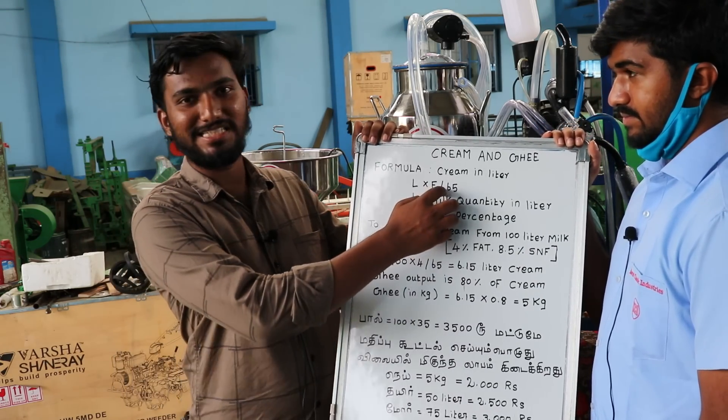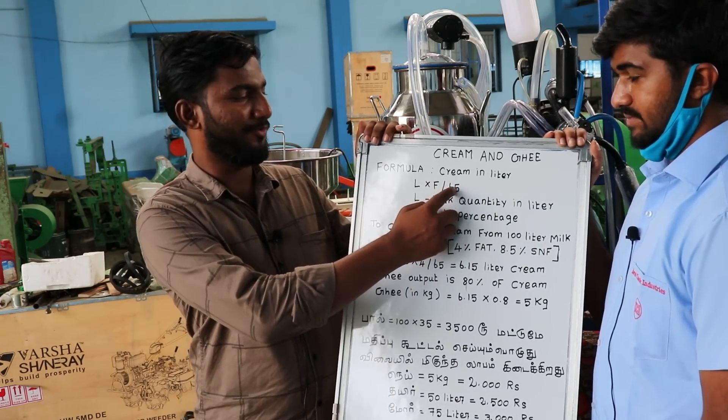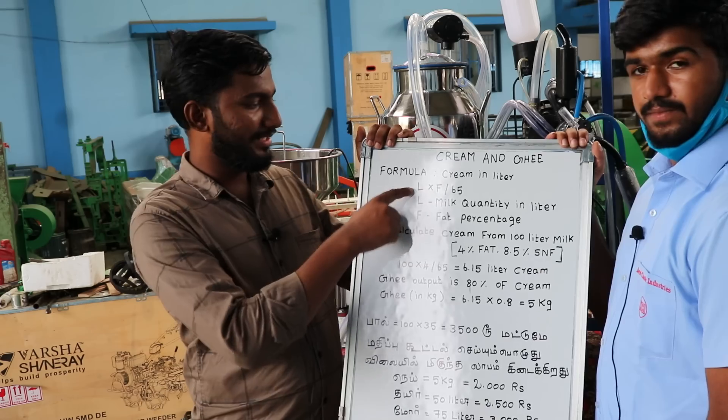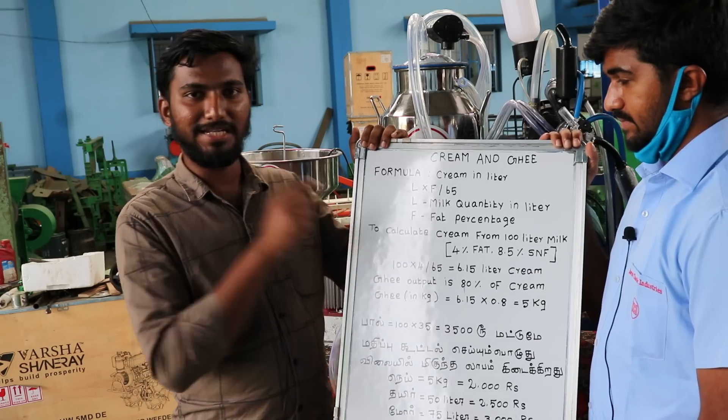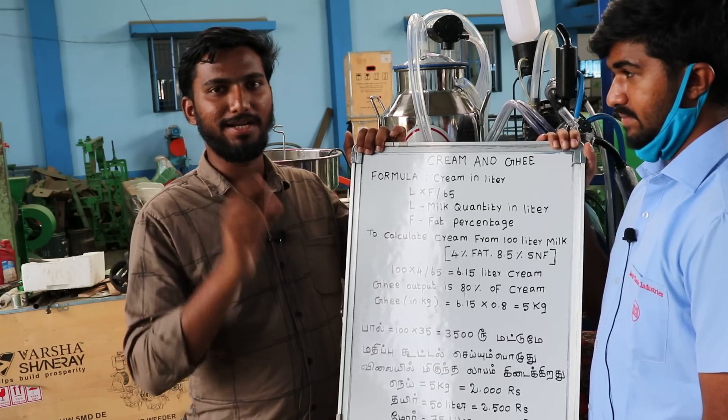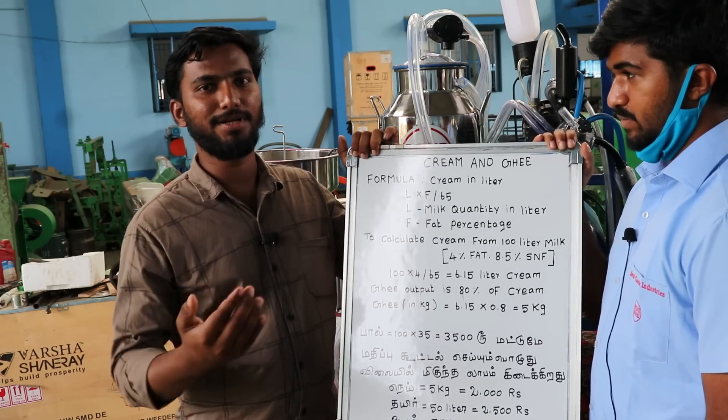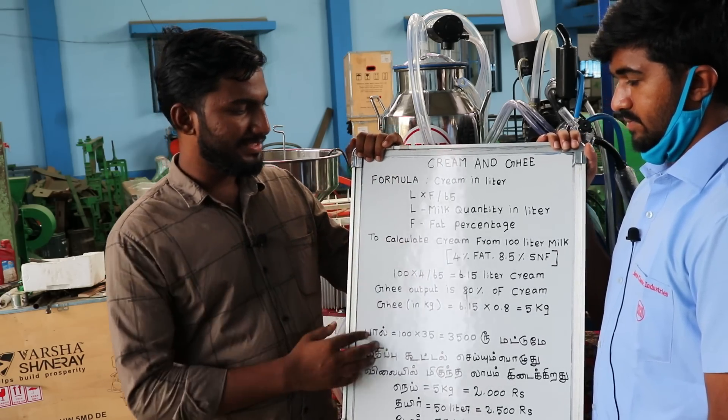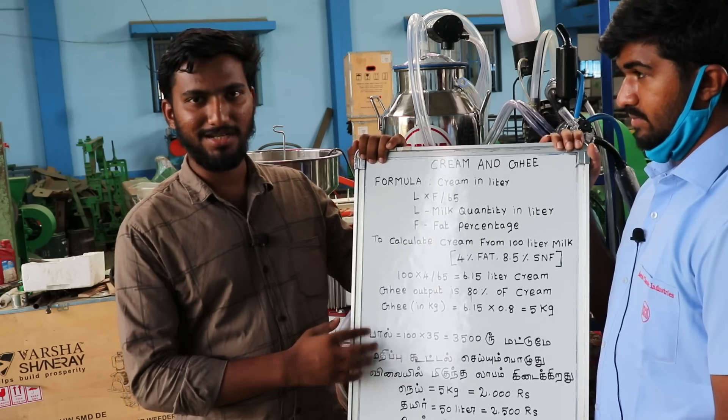L into F divided by 65. This works out to around 21,000 rupees total fat at 5. This is the ratio for about 500 rupees. A simple and straightforward calculation.